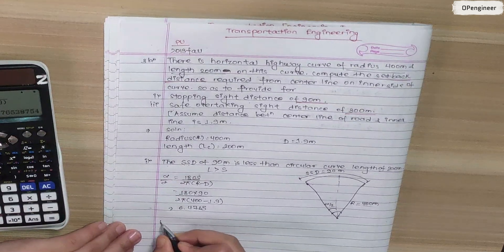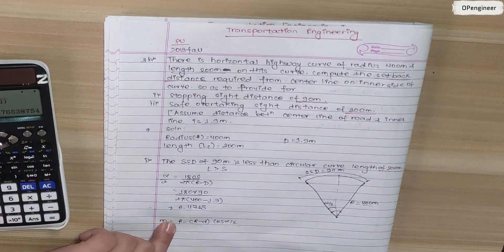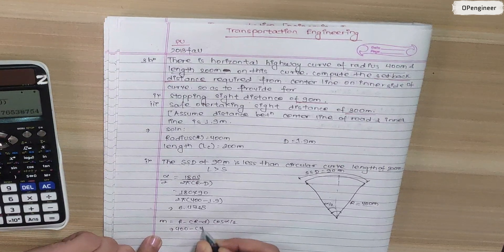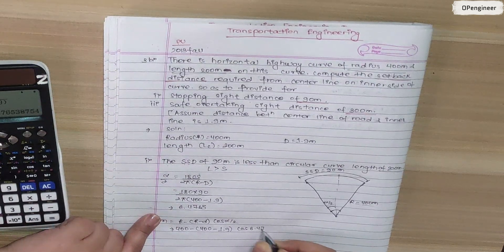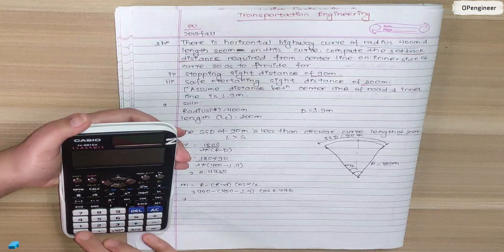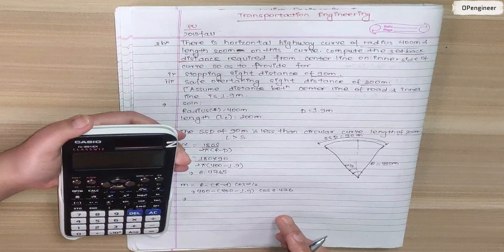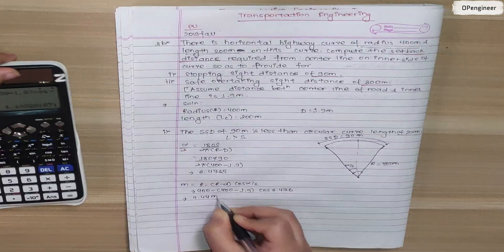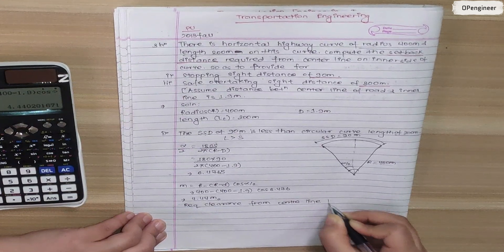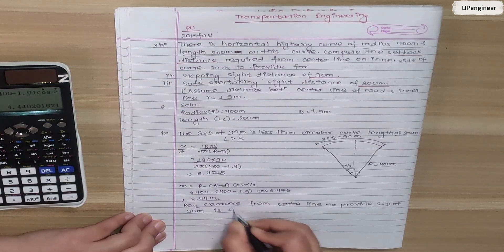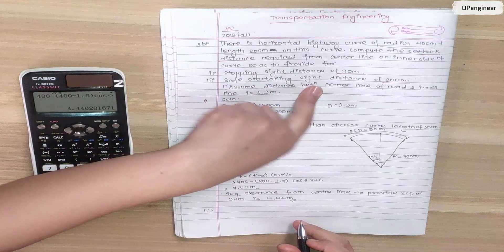The clearance formula is: R minus (R minus d) cos(alpha/2). Substituting radius = 400m, cos(alpha/2) = cos(6.476), we calculate: 400 minus (400 minus 1.9) cos(6.476) = 4.44 meters. Therefore, the required clearance from the center line for a stopping sight distance of 90m is 4.44 meters.